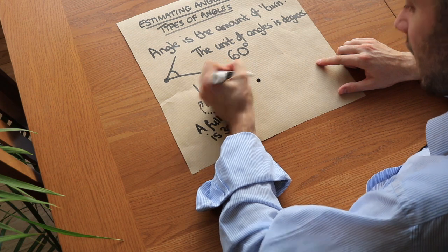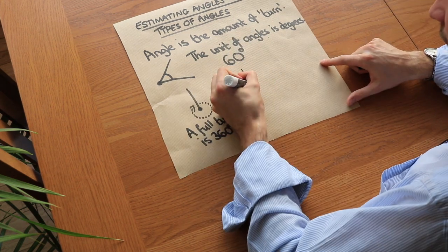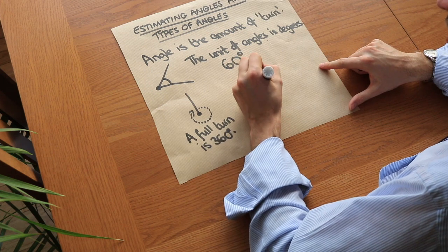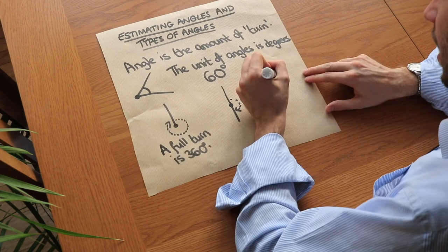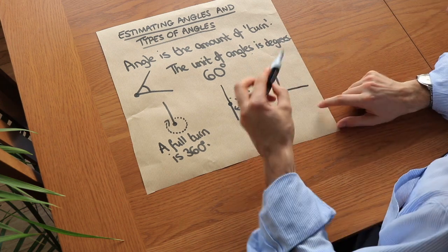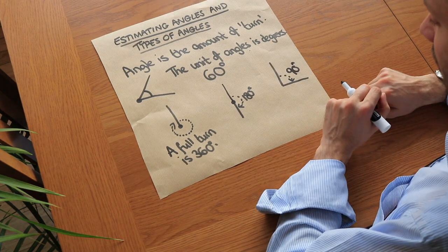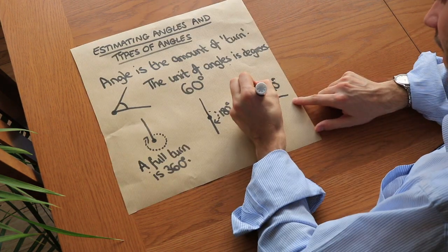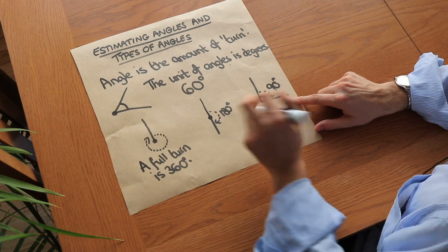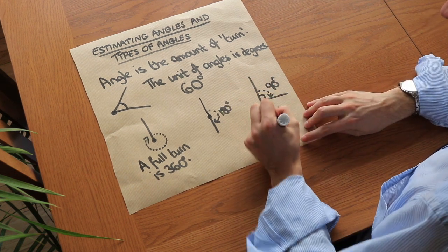That means if we were standing here and we did a half turn, spinning around halfway, that would be 180 degrees because that's half of 360. If we just did a quarter of a spin, from here to here, that would be 90 degrees because 90 is a quarter of 360. We'd often indicate that with a little square here, and we call that a right angle.